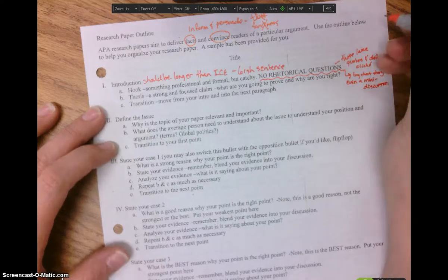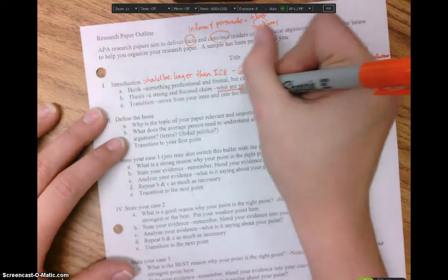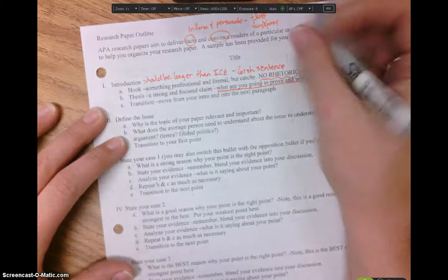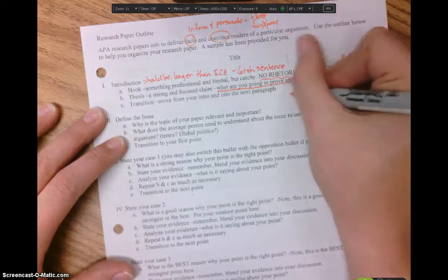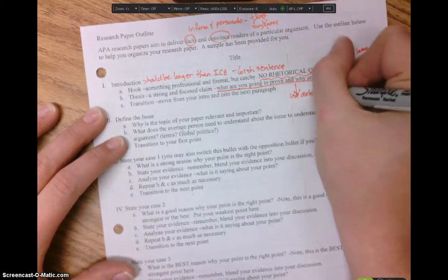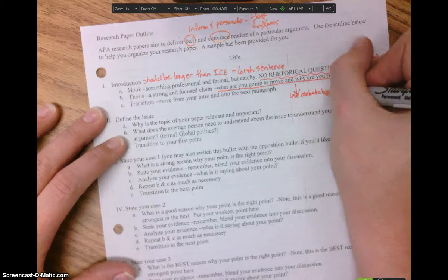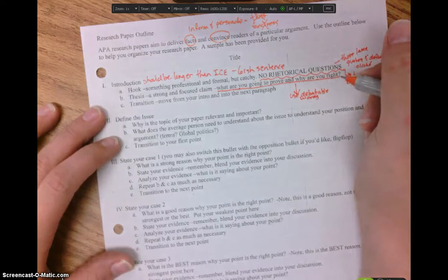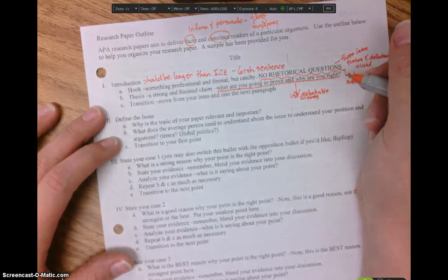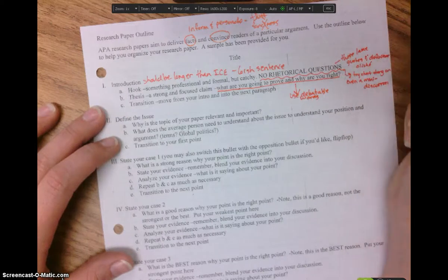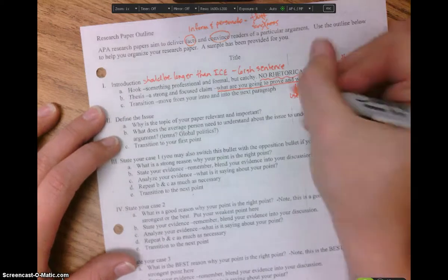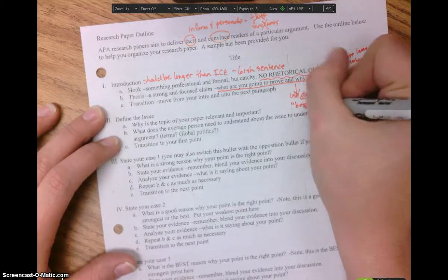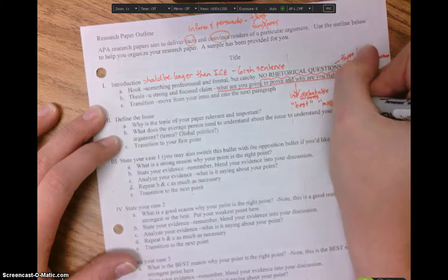You're going to want to have, remember that your thesis needs to be debatable, you're proving something. So you want this to use debatable words like best or most, like most efficient, like the most efficient method to teach kindergarteners their phonics is blank because blank and blank. So use that debate language, best, most, preferable.